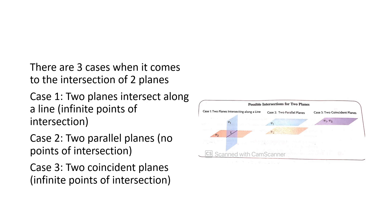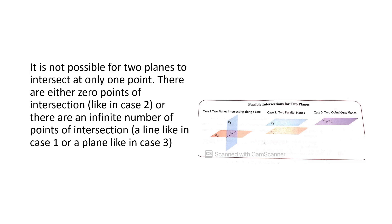In case two, you'll have two parallel planes with no points of intersection. And in case three, you can have two parallel coincident planes with infinite points of intersection. It's not possible for two planes to only intersect at one point. There are either zero points of intersection or an infinite number of points of intersection, whether it be a line or a plane.